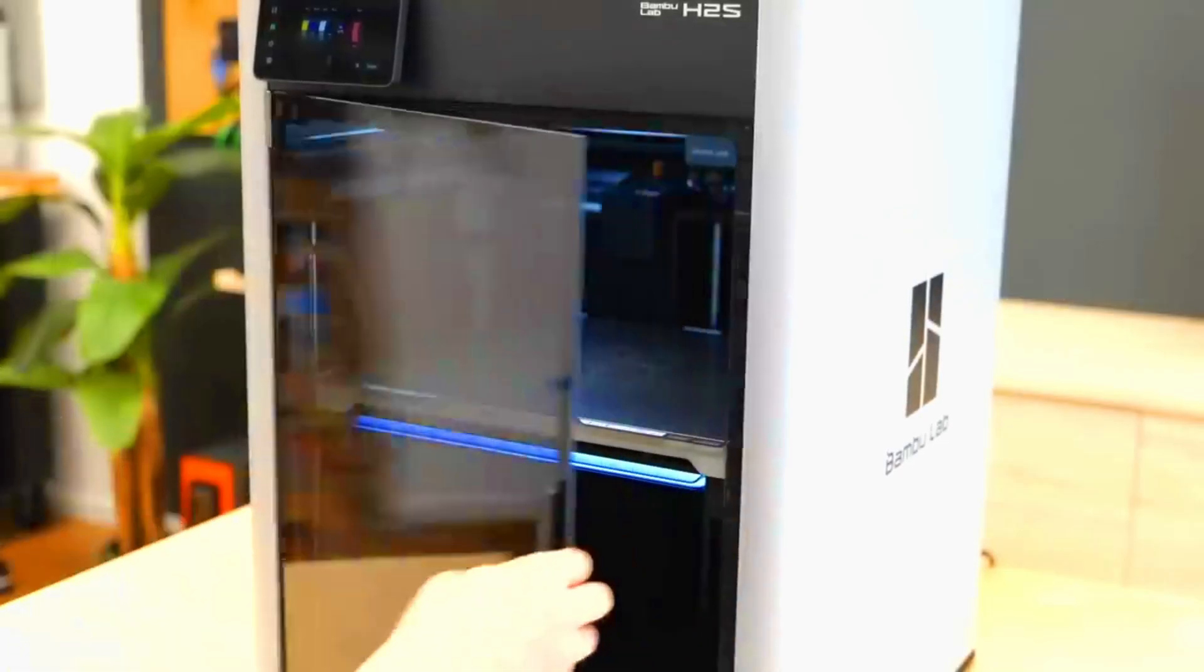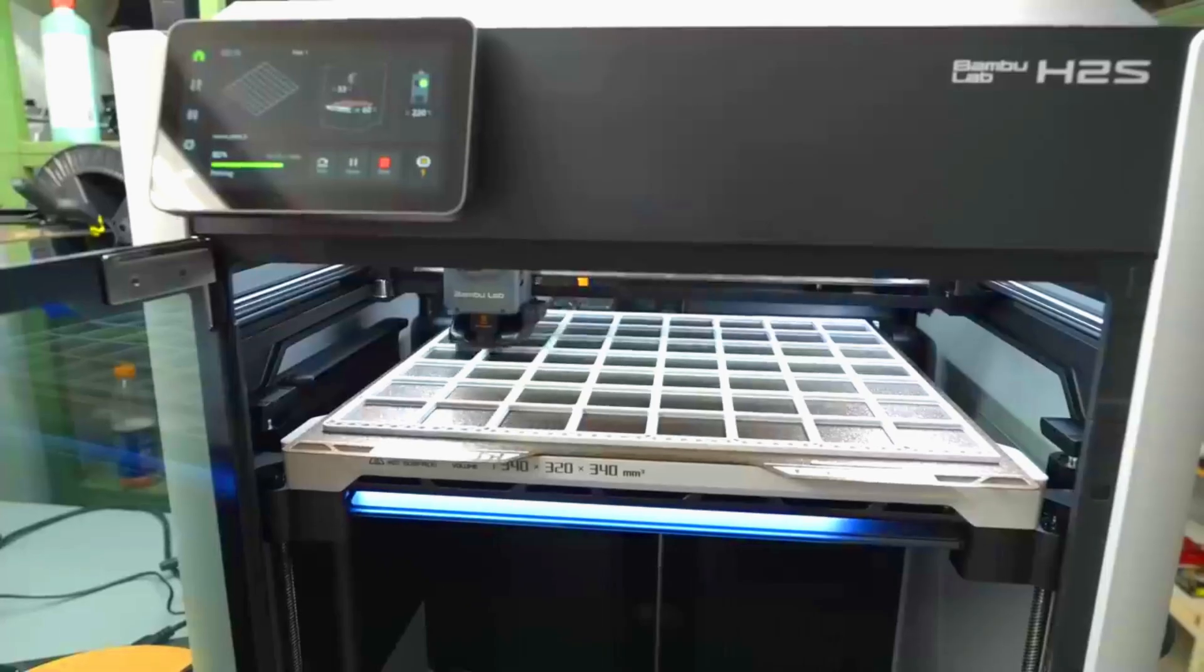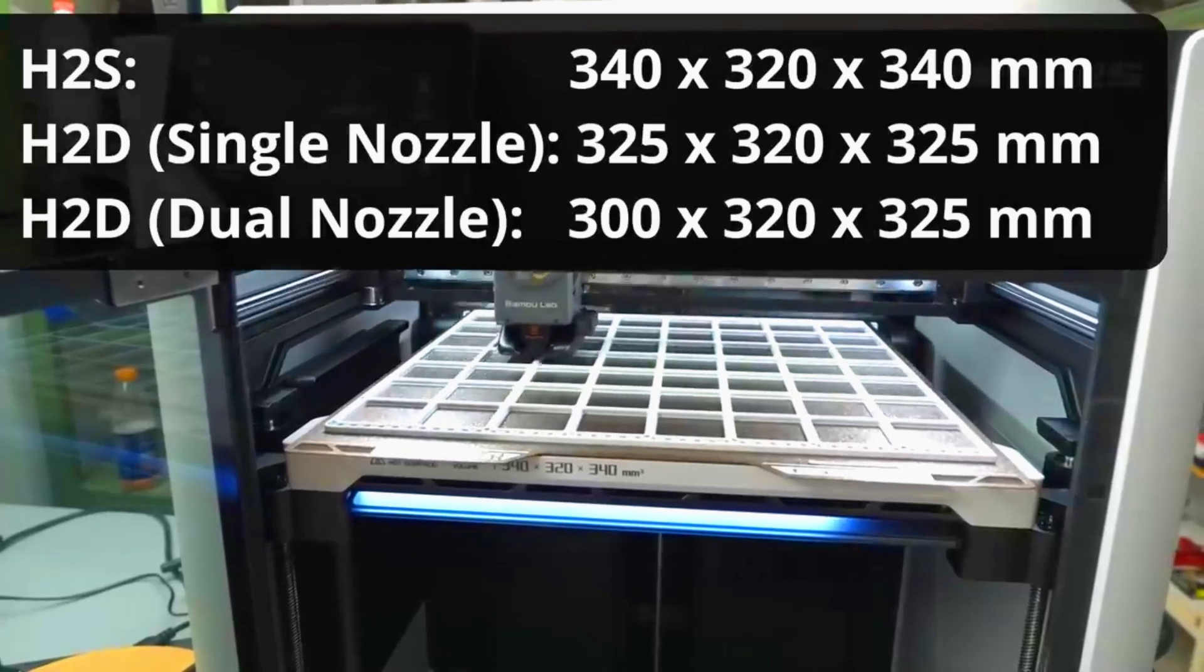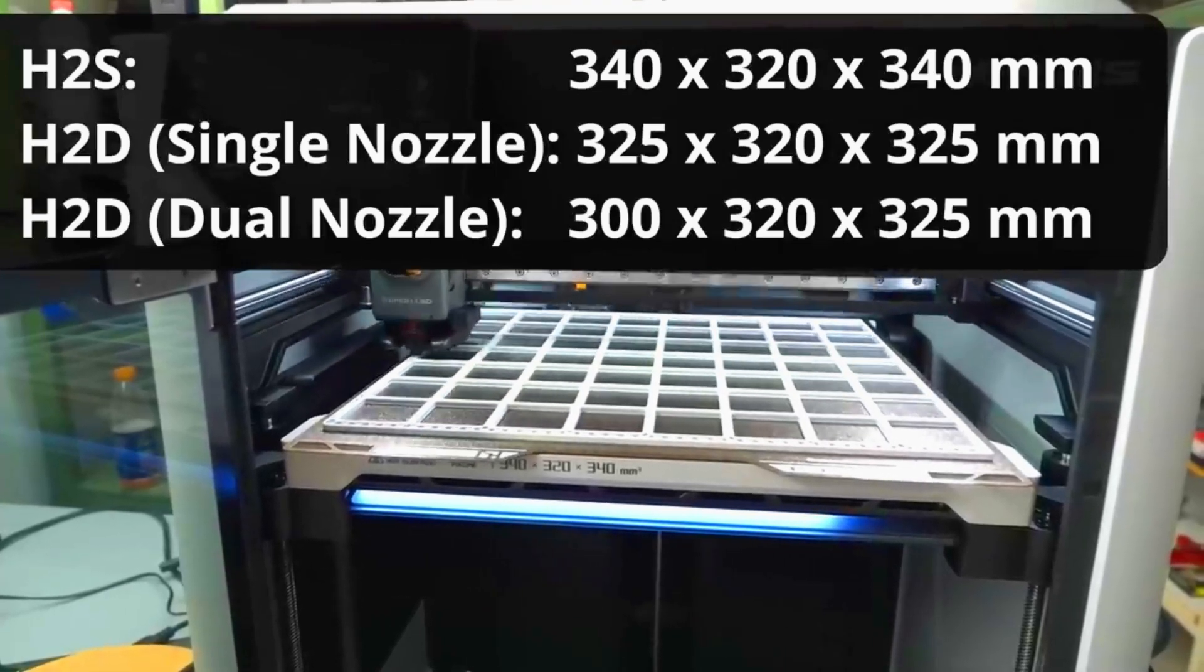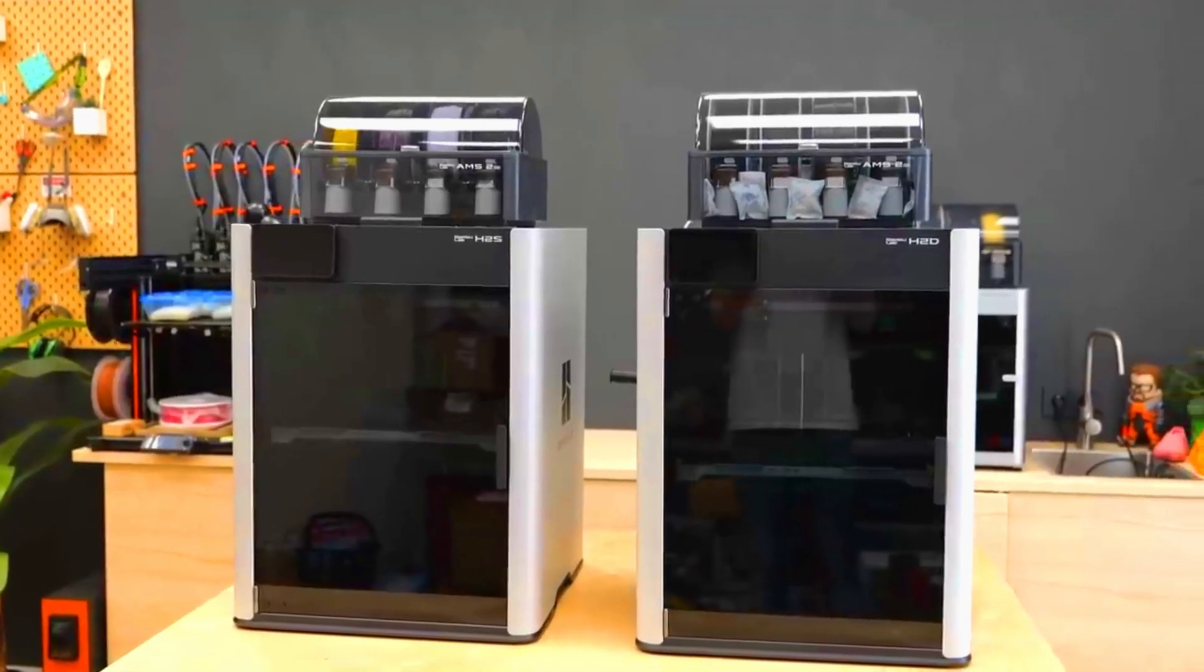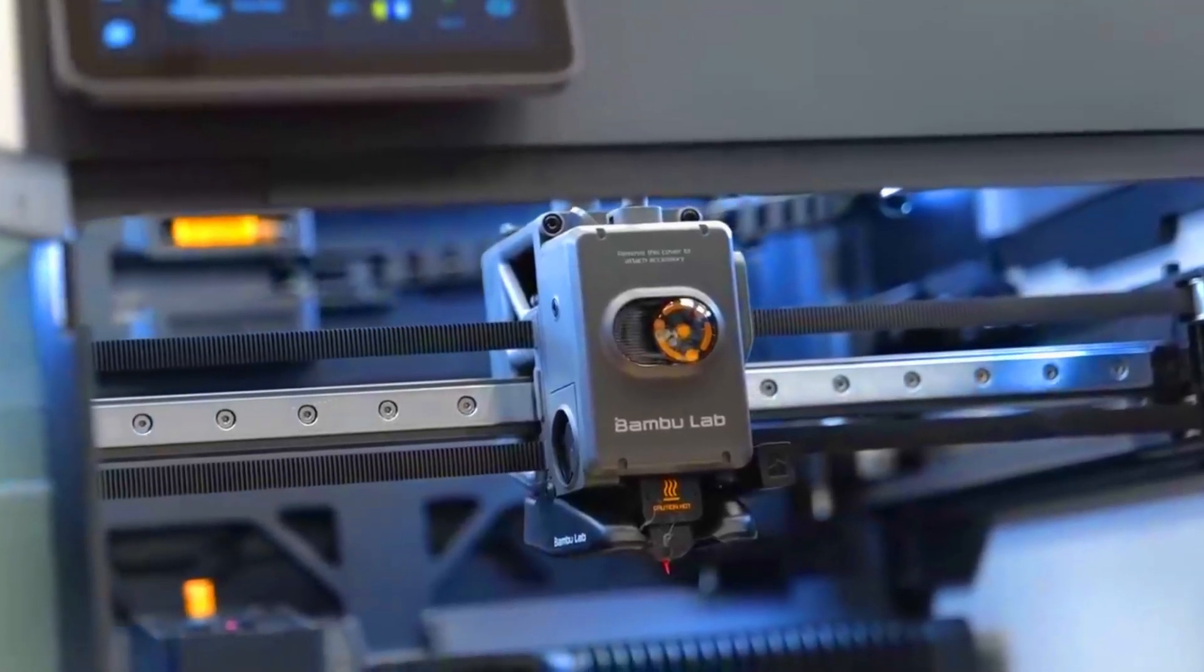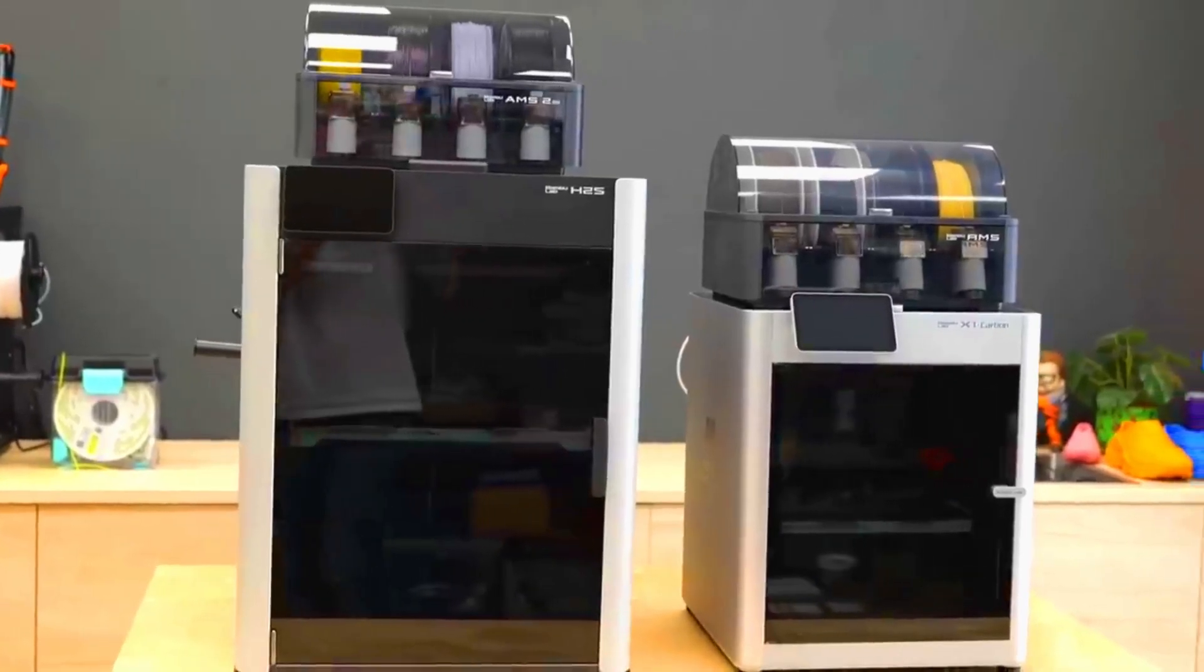Is the build volume the same? No, it's actually bigger. Thanks to the more compact tool head, the H2S boasts a build volume of 340x320x340mm. That's 15mm taller and up to 40mm wider than the H2D, depending on its mode. That's more than double the volume of the X1 Carbon.